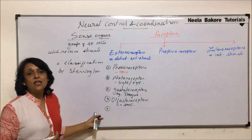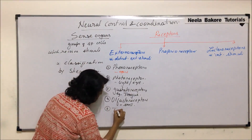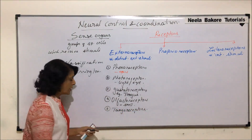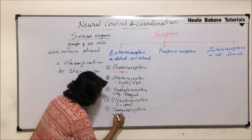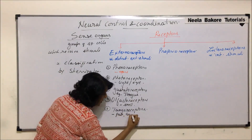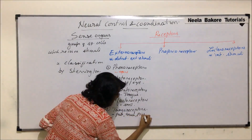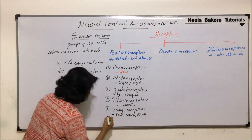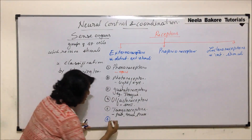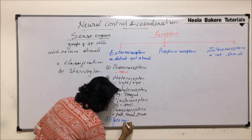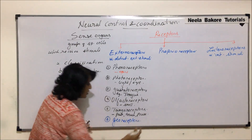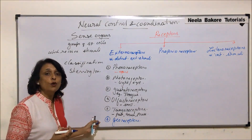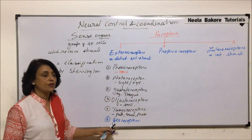Then the receptors which are on the skin are called tangoreceptors. These help us detect pain, touch, pressure, and so on. So we will be talking about all those receptors on the skin. Then georeceptors — georeceptors are the ones which help us adjust ourselves to gravity, and that is why they are called georeceptors.